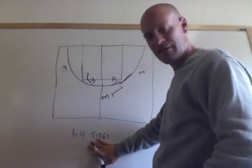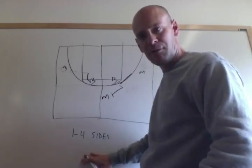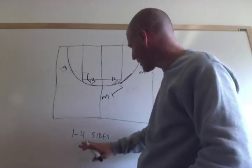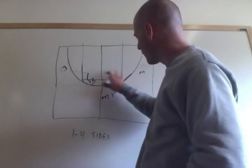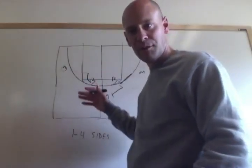So that's our side setup that we run out of 1-4 high offense. You've probably seen it referenced as blocker mover. We've got the post players designated as the screeners or the blockers for these movers on the perimeter.